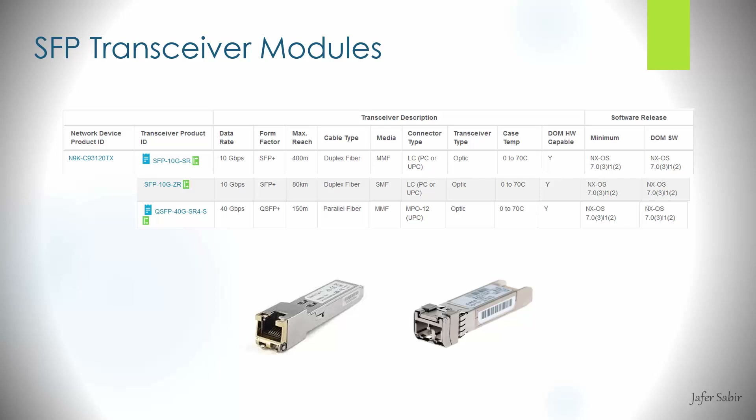Here are a couple of examples of SFP transceiver modules for the 9300 series Nexus switches. The top one is a 10 gig SFP+ port supporting multimode with a maximum distance of 400 meters. The next is an SFP 10 gig single mode module that can travel up to 80 kilometers. The third is a 40 gig QSFP module with an MPO connection type and 150 meters maximum distance. There are many other 10 gig and 40 gig SFP modules available for the Nexus 9300.